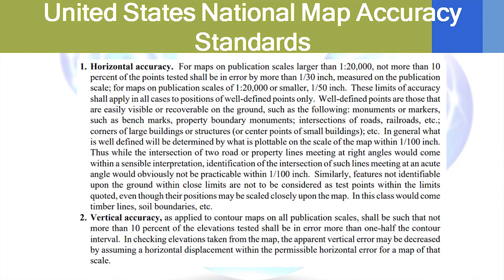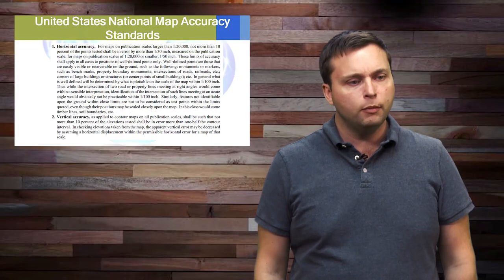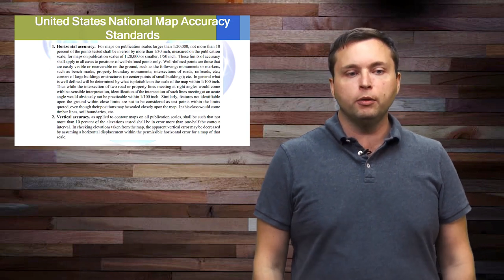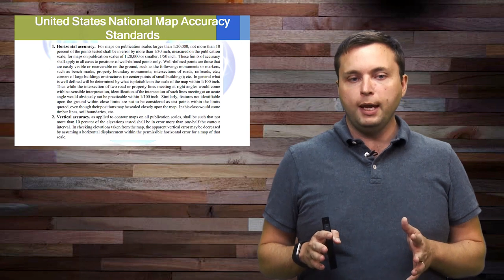Same thing for paper maps. The US National Map Accuracy Standard is pretty much always tested on the PS. You're given a map and you're given a scale and it says, does this map meet the standards? Well, according to the Vertical Accuracy Standards, it says that, quote, Vertical Accuracy as applied to contour maps on all publication scales shall be such as not more than 10% of the data should be one half of a contour interval off. Hmm, what does that mean? So, a contour interval is 25 feet for a given map.